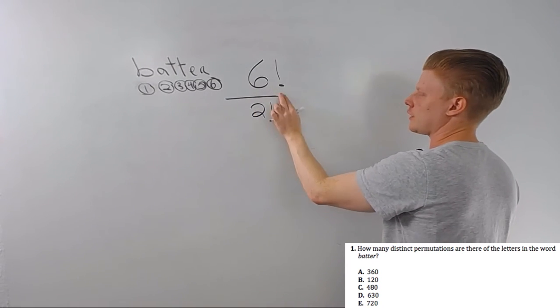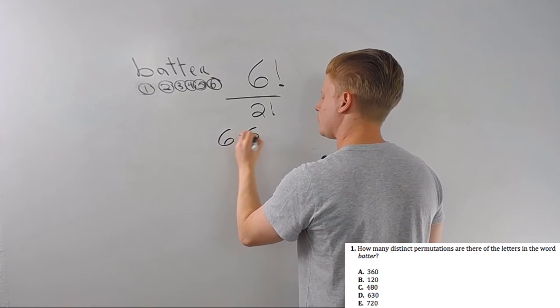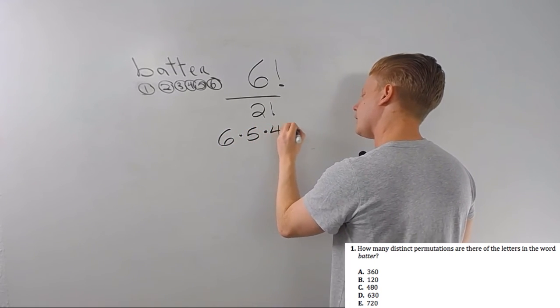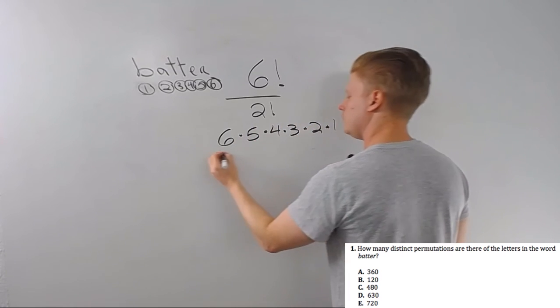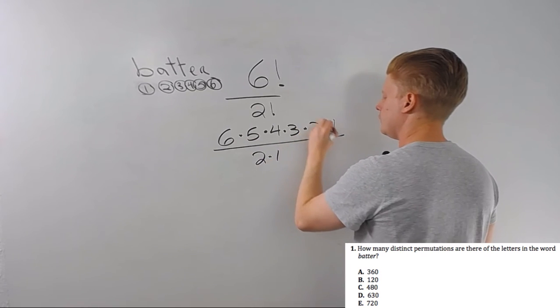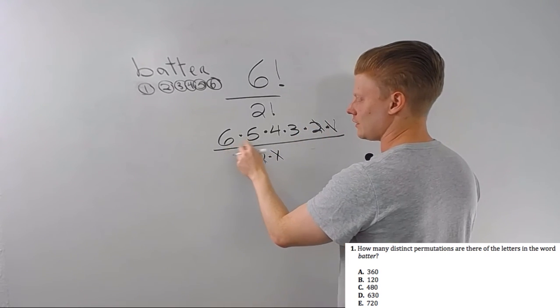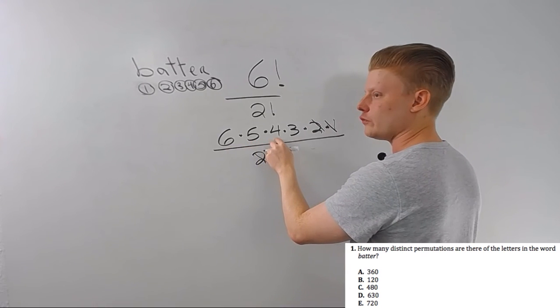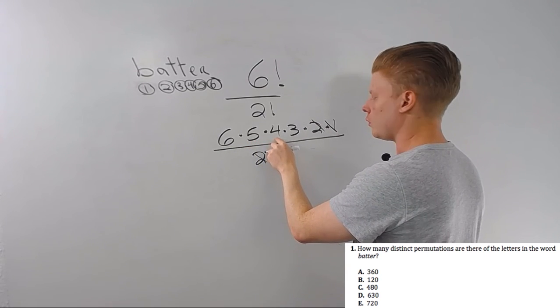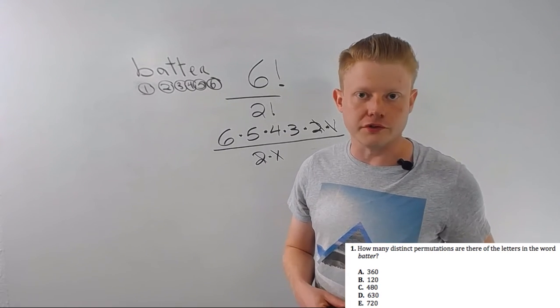So we have six letters. That's the number of things we've got. We have a repeat, a T that repeats twice, and that's all we have to do. Now you can punch this in your calculator. It's also not too bad to work out by hand. Six times five times four times three times two times one over two times one. One and two cancel. Not that the one really does any good. Six times five is 30, times four is 120, times three is 360. That's all there is to that.